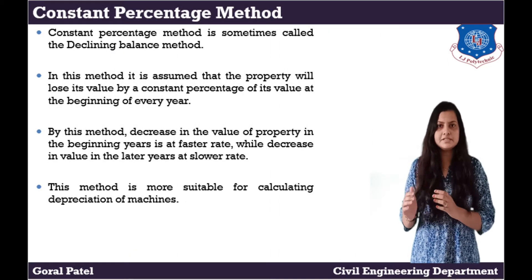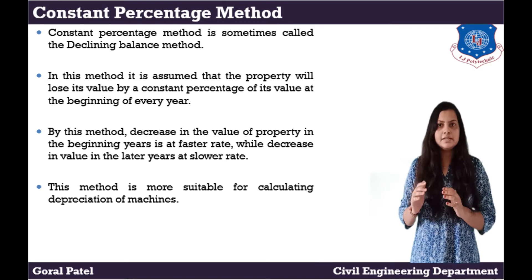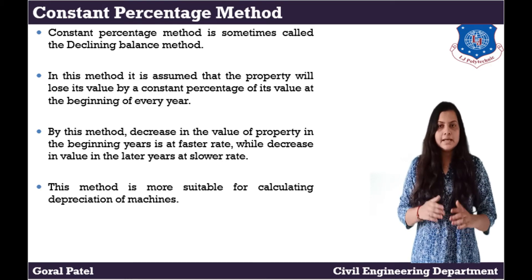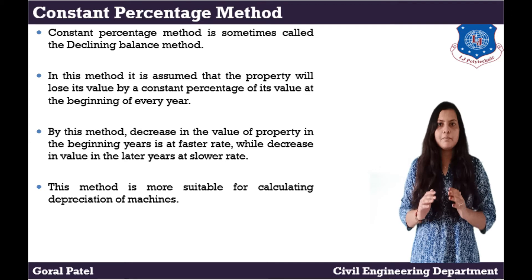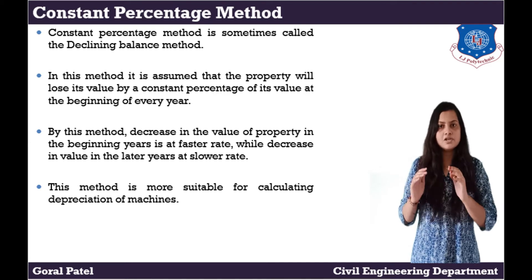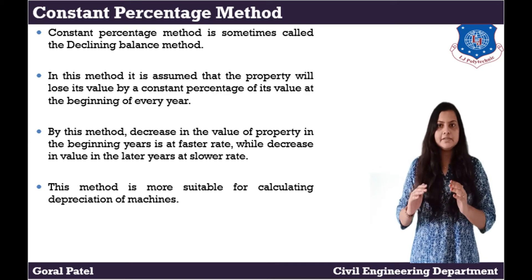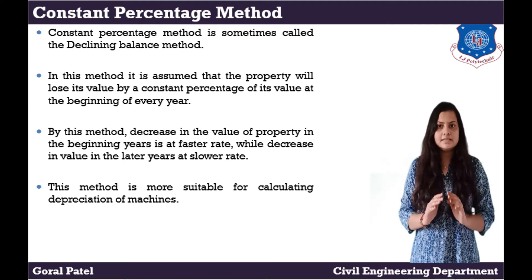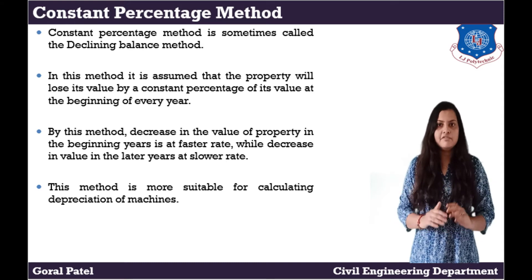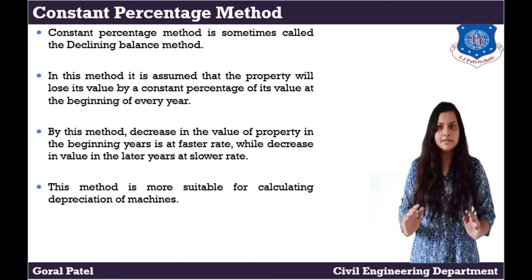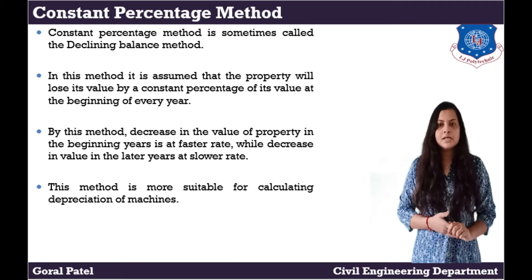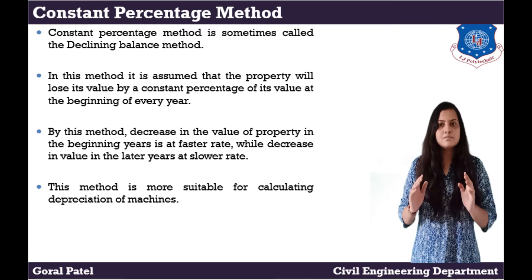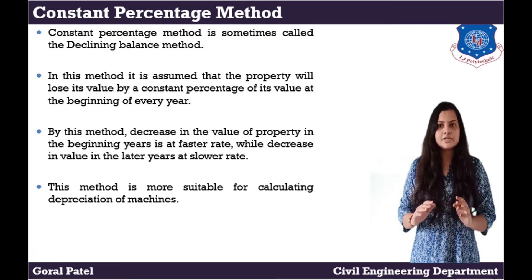The next method is the constant percentage method, sometimes called the declining balance method. In this method, it is assumed that the property will lose its value by a constant percentage of its value at the beginning of every year. By this method, the decrease in value in the beginning years is at a faster rate, while the decrease in the later years is at a slower rate. This method is more suitable for calculating depreciation of machines.